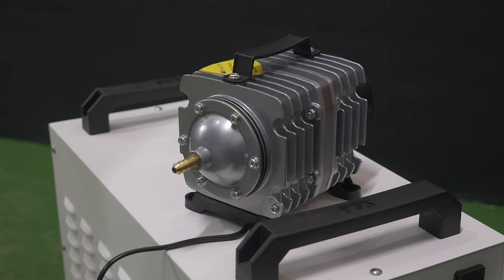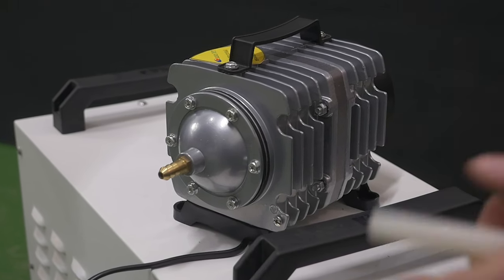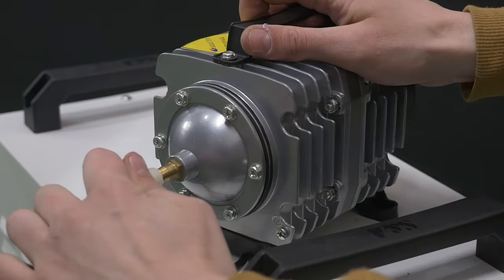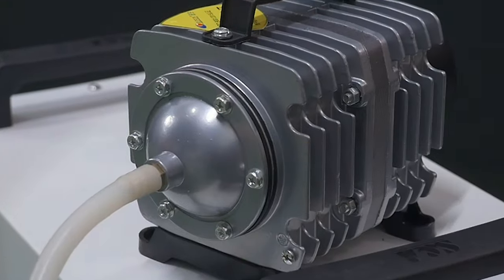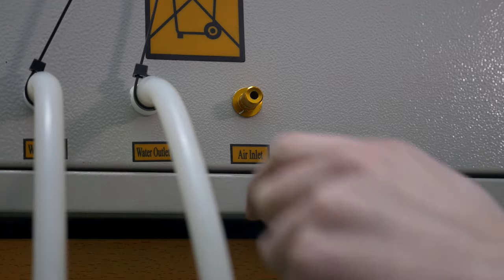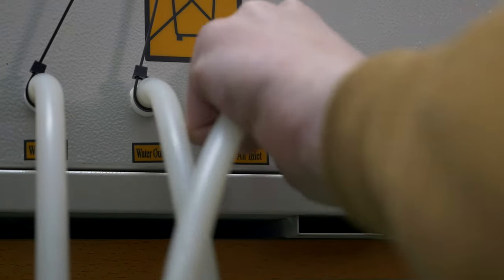Do the same with the hose that connects the air compressor. One end goes to the coupling and the other to the compressor. Connect the compressor to a special socket located on the right side of the machine next to where we connect the power supply.